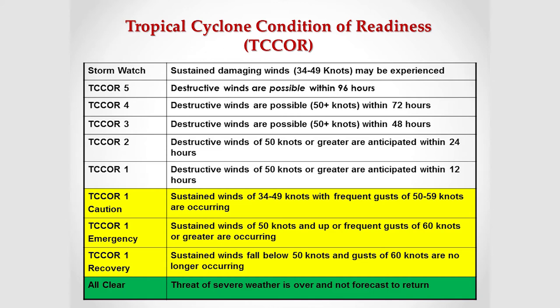T-Core 1 is destructive winds of 50 knots or greater within 12 hours. This is where we shift from non-essential services into emergency essential services. Mission essential services will remain open, and non-essential personnel will go home or remain home, possibly teleworking or responding to directions from their home command or unit.